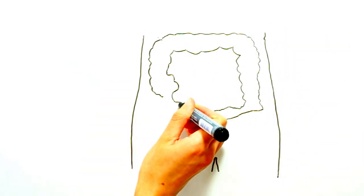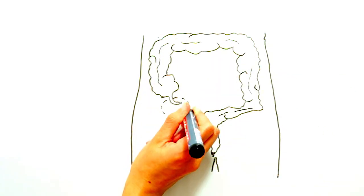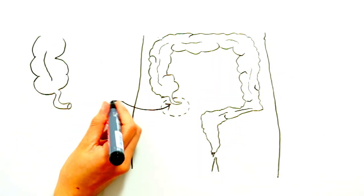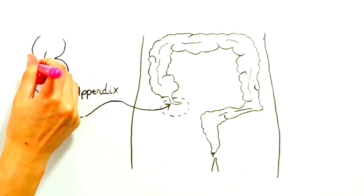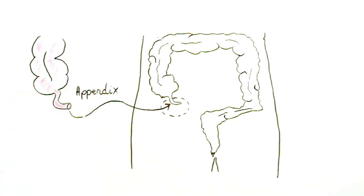The appendix is a small organ which is attached to the large intestine. It is generally thought to be non-essential because it can be removed without causing any health problems. But this then begs the question as to why we have one if it isn't needed.